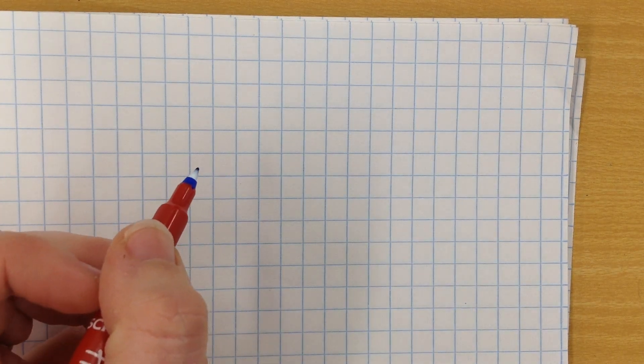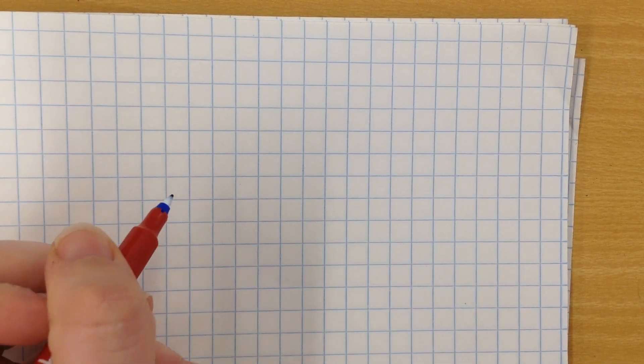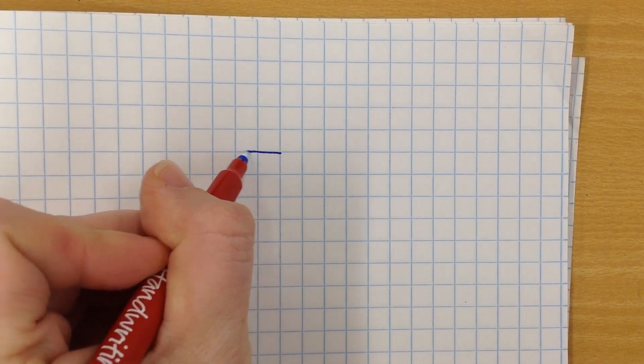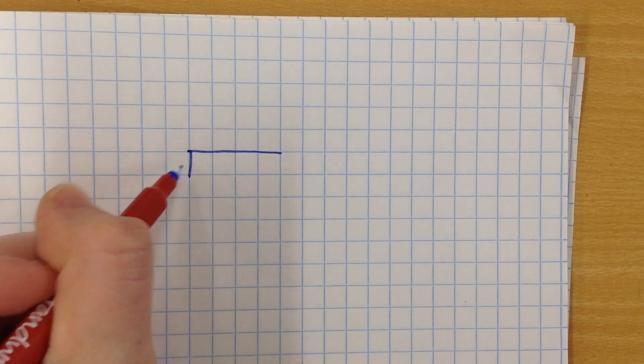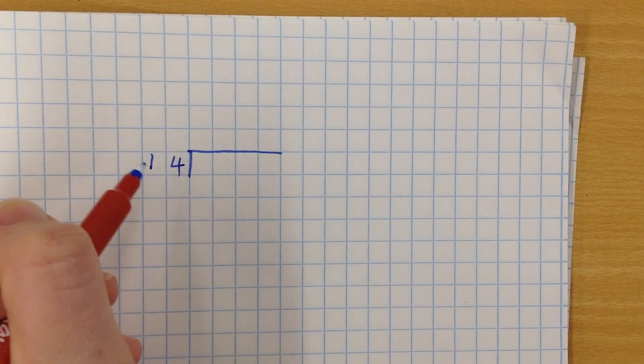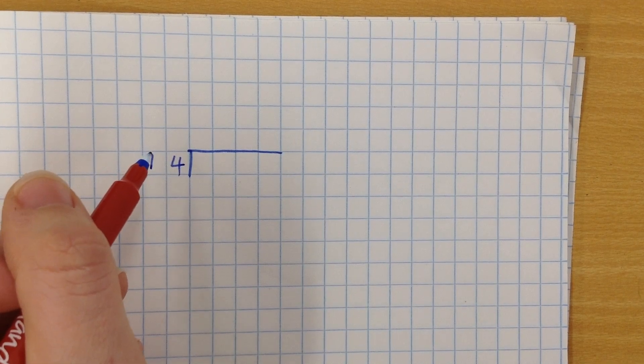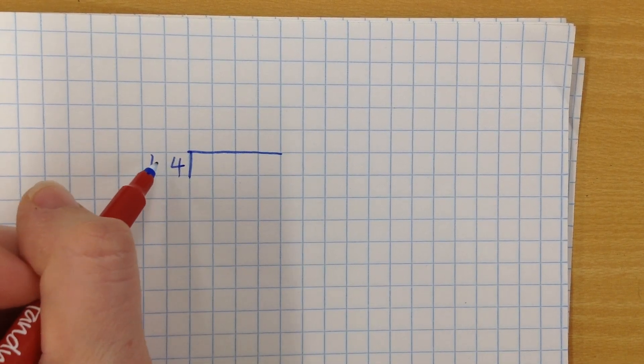I'm now going to show you how to do a long division method, and this is always used for numbers, dividing numbers that are bigger than 12 probably, any number that you're not necessarily going to know the multiplication straight away.